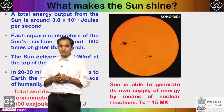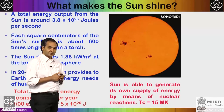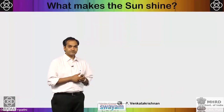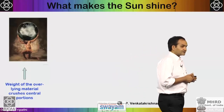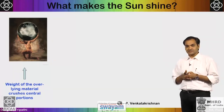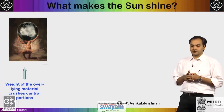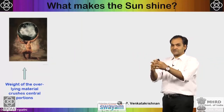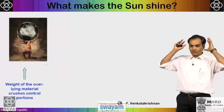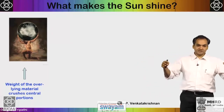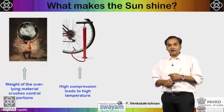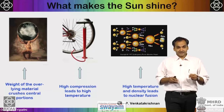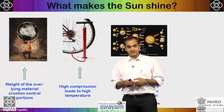The sun generates energy through nuclear reactions at the core temperature of 15 million degrees. The sun is a self-gravitating body: the weight of overlying material crushes the center, causing collapse, compression, and very high temperature and density — like pumping air into a bicycle tire. This starts nuclear fusion. We can verify this using order-of-magnitude estimates of the central pressure from the weight of the material column.